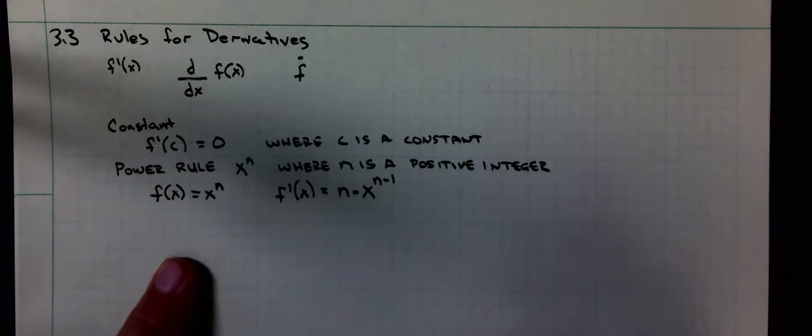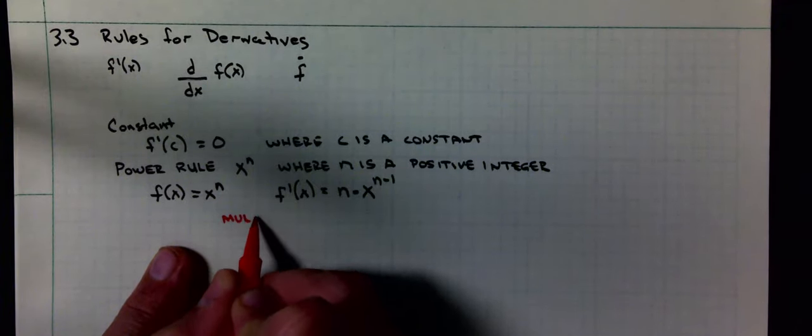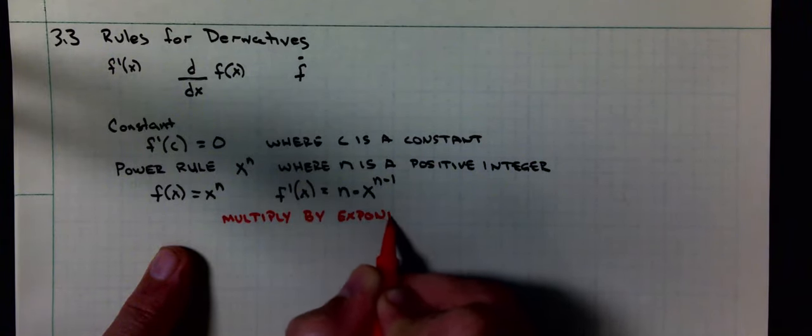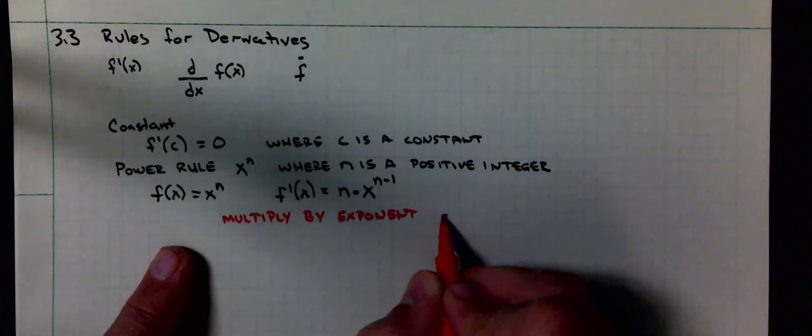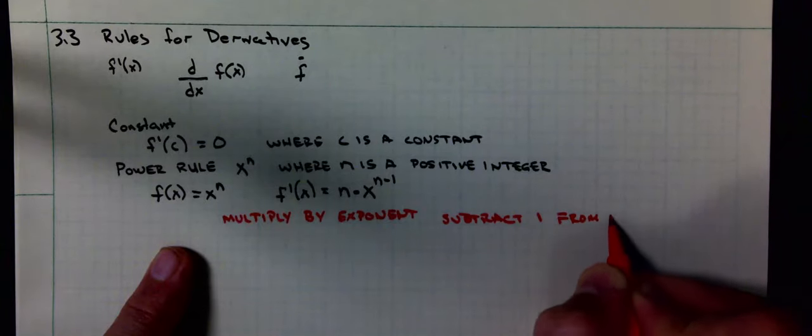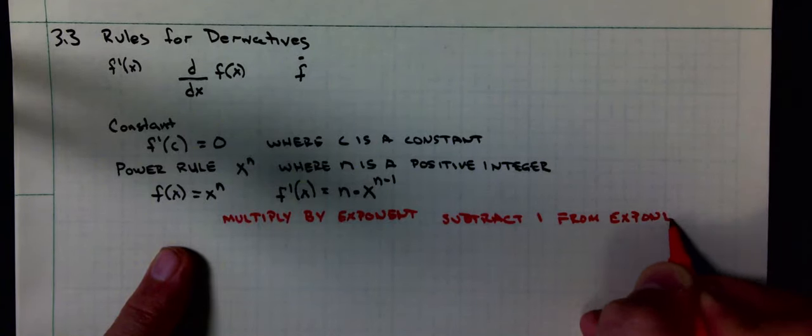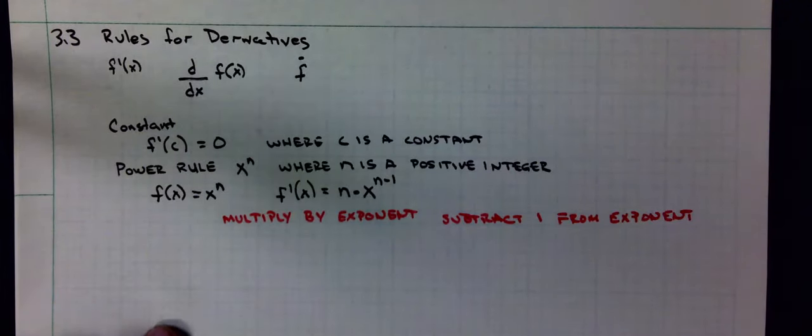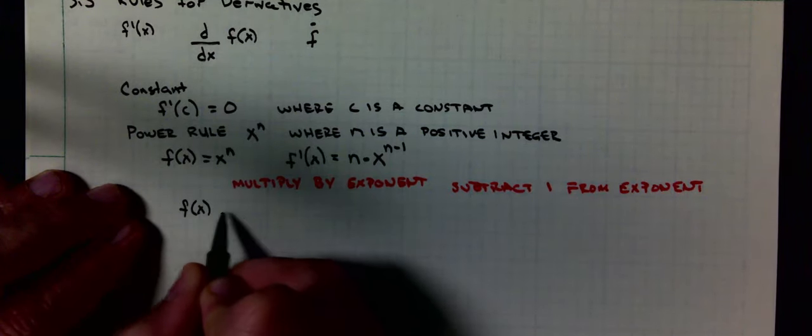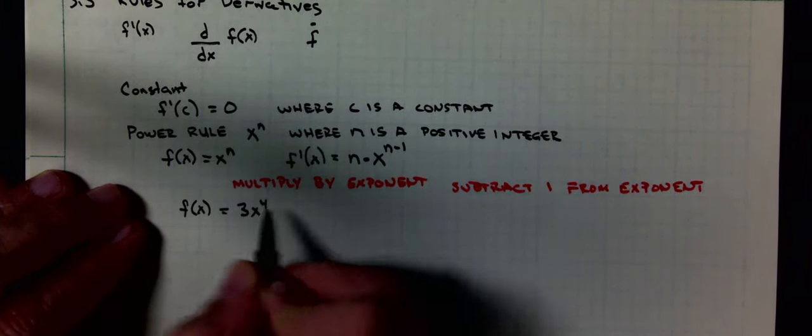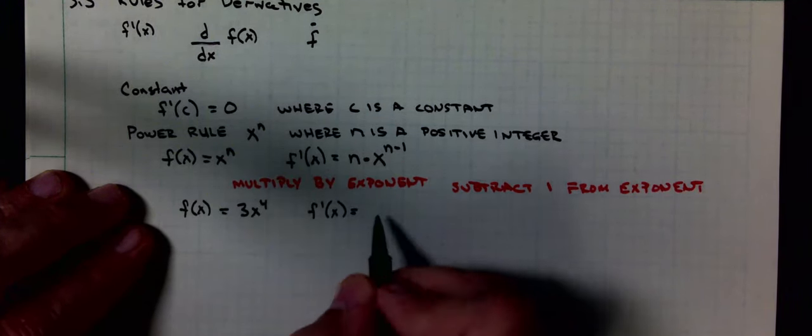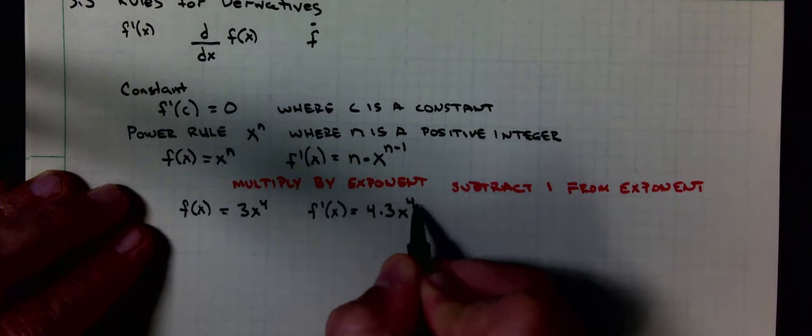And in words, our rule states: multiply by the exponent, subtract one from the exponent. Multiply by the exponent, subtract one from the exponent.